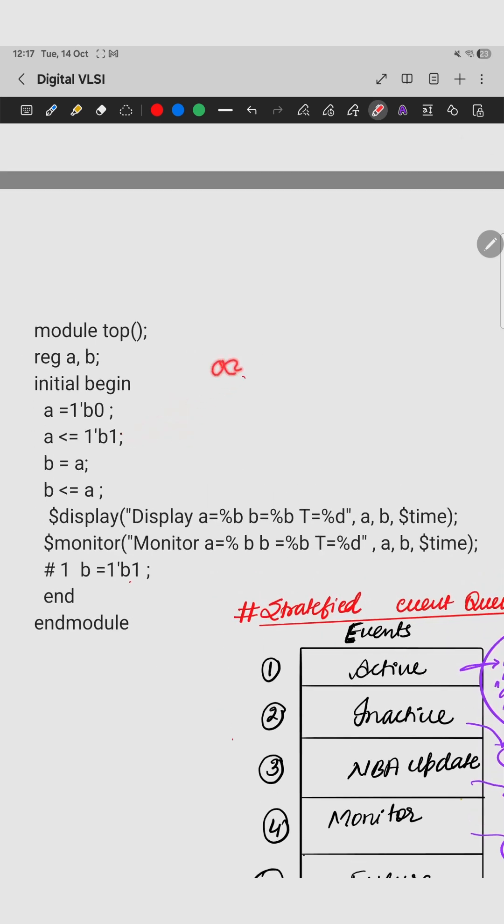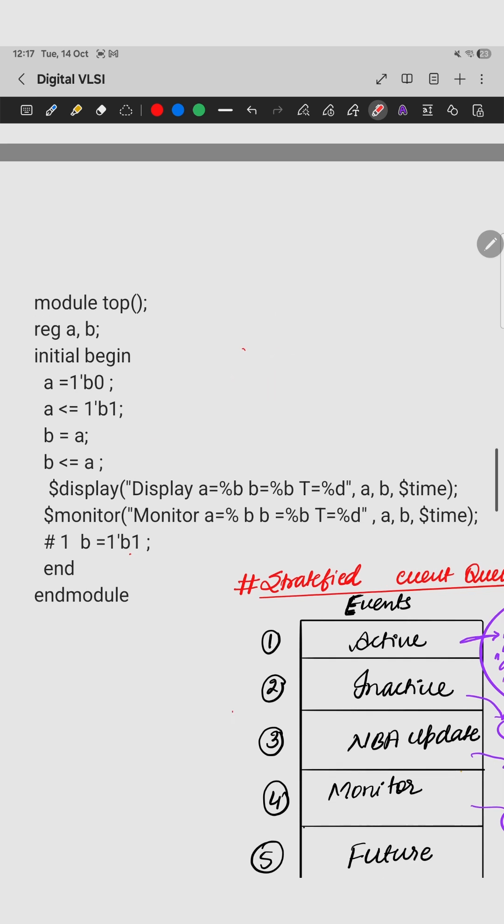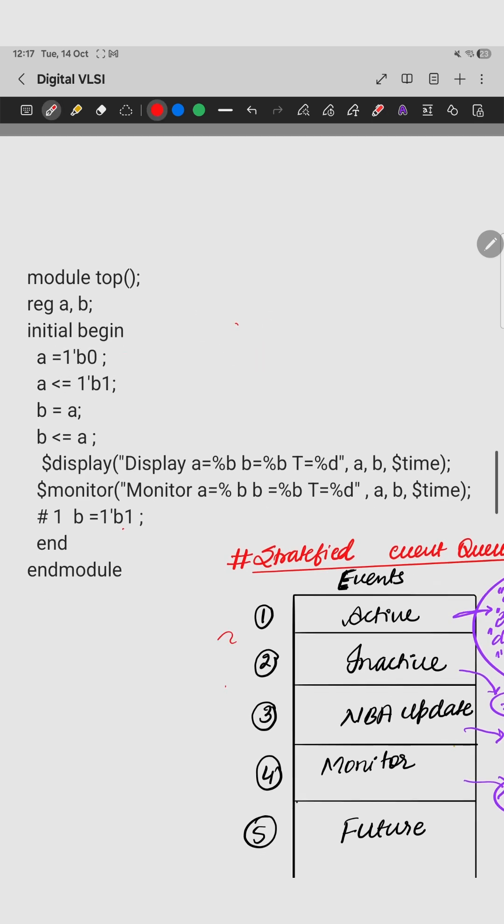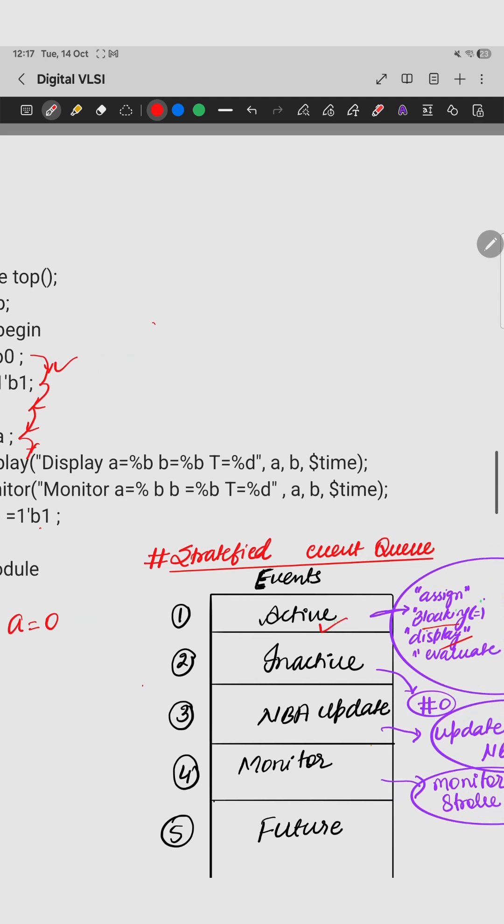I am talking about this statement. First A is scheduled to get value of 1, but this will be updated in the second step. Now let's solve this question. First, let's start from this and go in a sequential manner. When we are writing this, A is getting a value of 0 and this is a blocking assignment, and in active region this blocking statement is there first.